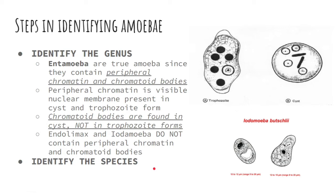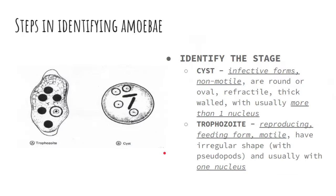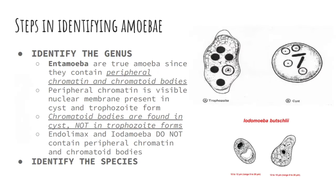How do you identify an amoeba? First, identify the stage — is it a cyst or trophozoite form? In reporting amoeba results in the laboratory, it is required that you specify if you have seen a cyst or trophozoite form under the microscope. Second, identify the genus based on the presence of peripheral chromatin and chromatoid bodies. Then identify the species based on its characteristic morphology.